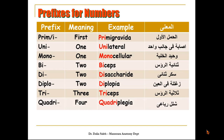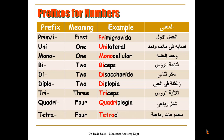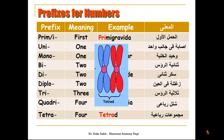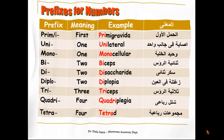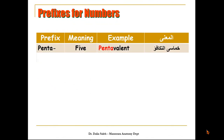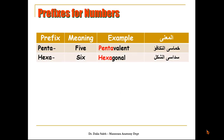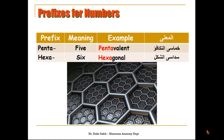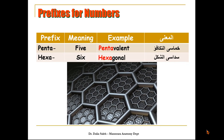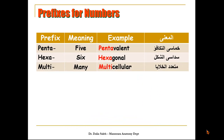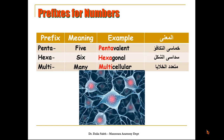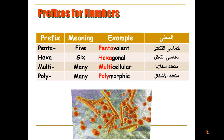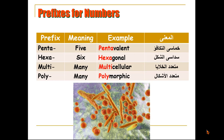'Quadri' means four, as in 'quadriplegia', paralysis of all four limbs. 'Tetra' also means four, as in 'tetrad'. 'Penta' means five, as in 'pentavalent'. 'Hexa' means six, as in 'hexagonal'. 'Multi' means many, as in 'multicellular'. 'Poly' also means many, as in 'polymorphic'.